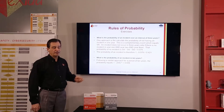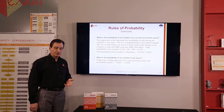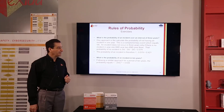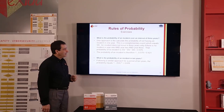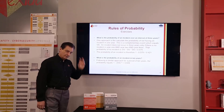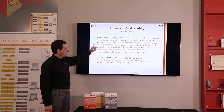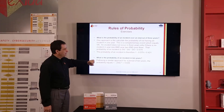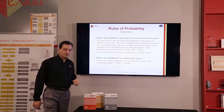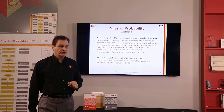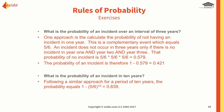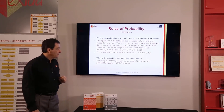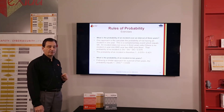This applies when we consider safety instrumented systems and probabilities of failure — the longer the time period, the more likely we are to get a failure. So think slightly differently: instead of thinking positively, use the complement rule to say we're not getting an incident. We reach the same answer as long as we remember the 1 minus. If you just use 0.579 without subtracting from 1, you won't get the right answer. The complement rule is very useful to simplify the math.